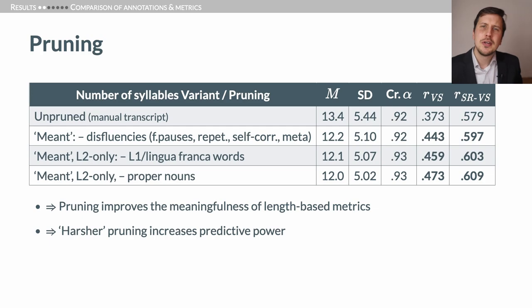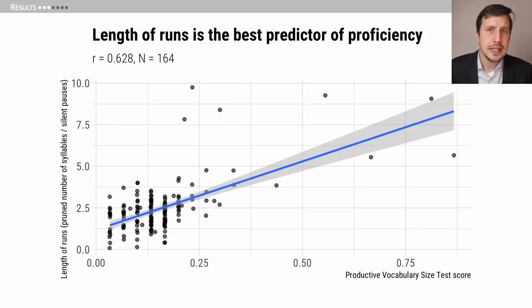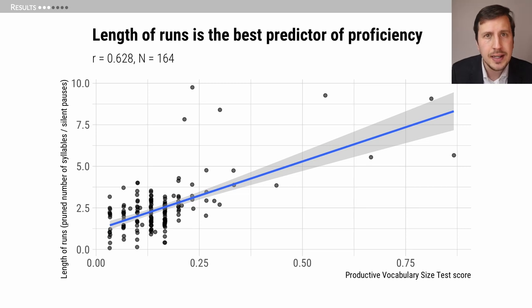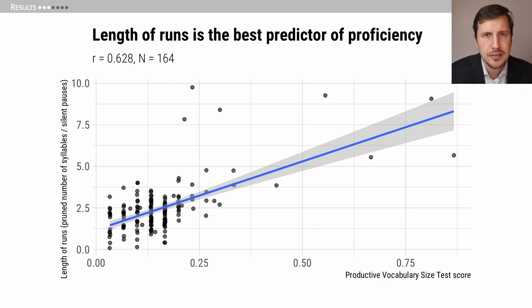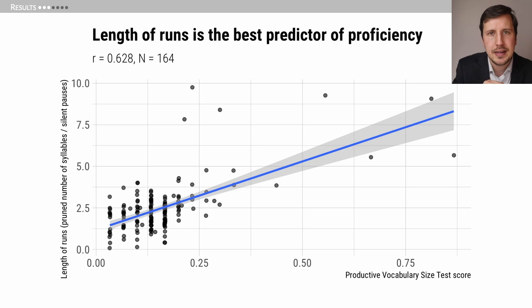What about composite fluency metrics? Which is the best predictor of L2 proficiency? In our study it's fully pruned length of runs. We reach a correlation coefficient of 0.63, which is really quite high. Even though many students had low vocabulary size scores — possibly because the test was more challenging than intended — you can see a very clear correlation trend between length of runs and vocabulary size.